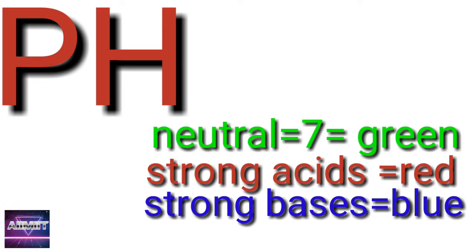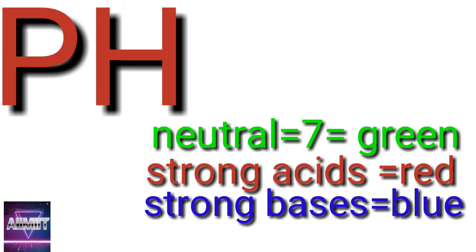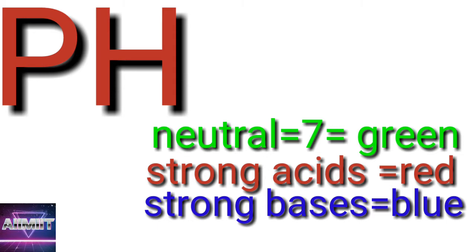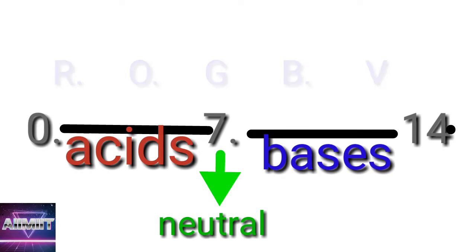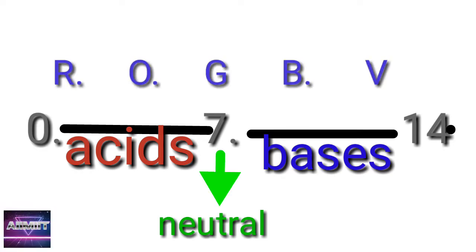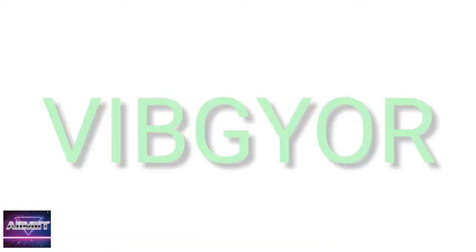Below 7 are acids — strong acids are represented by red and weak acids by orange or yellow. Above 7 are bases — weak bases are represented by blue and strong bases by purple. A hint to remember: from 14 to 1, the colors represent the rainbow sequence. This is a short summary of the pH experiment.